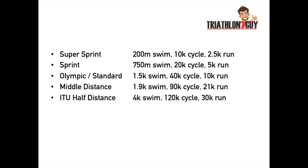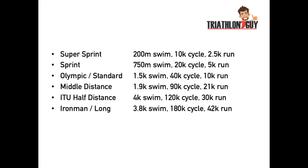The ITU half distance is a 4k swim, 120k cycle and a 30k run. And then finally, the Ironman, also known as the long distance — the most famous full triathlon — is a 3.8k swim, 180k cycle and then a 42k run. Just to put that into perspective, you're basically doing a 4k swim, riding 180km and then doing a marathon.